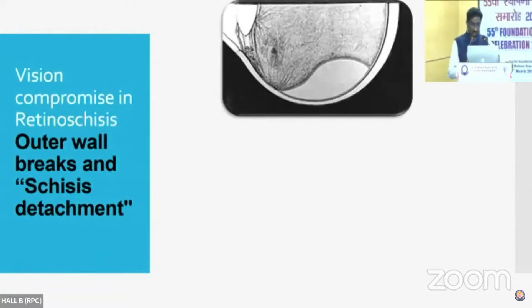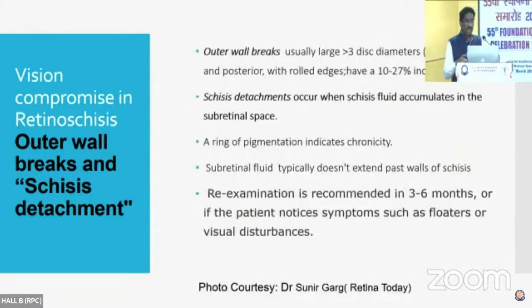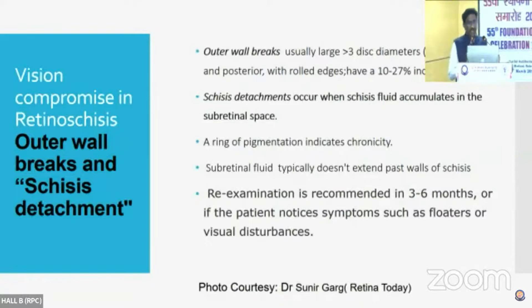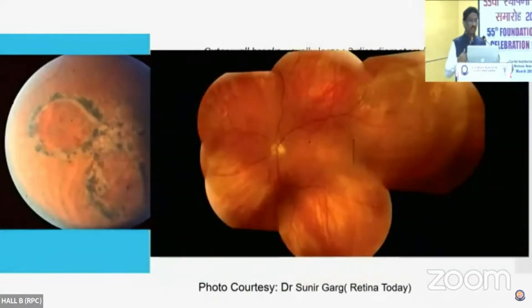The next cause is the formation of outer retinal breaks. Once the outer retinal breaks happen, the schisis fluid, which is rich in mucopolysaccharides, actually enters into the subretinal space and can start extending. These are usually large breaks, and the breaks may be there for a long time and you may see a ring of pigmentation. These also do not progress very rapidly. Re-examination at regular intervals is what is recommended. This photograph from Retina Today shows that a schisis detachment has been there for almost four years and has not progressed.